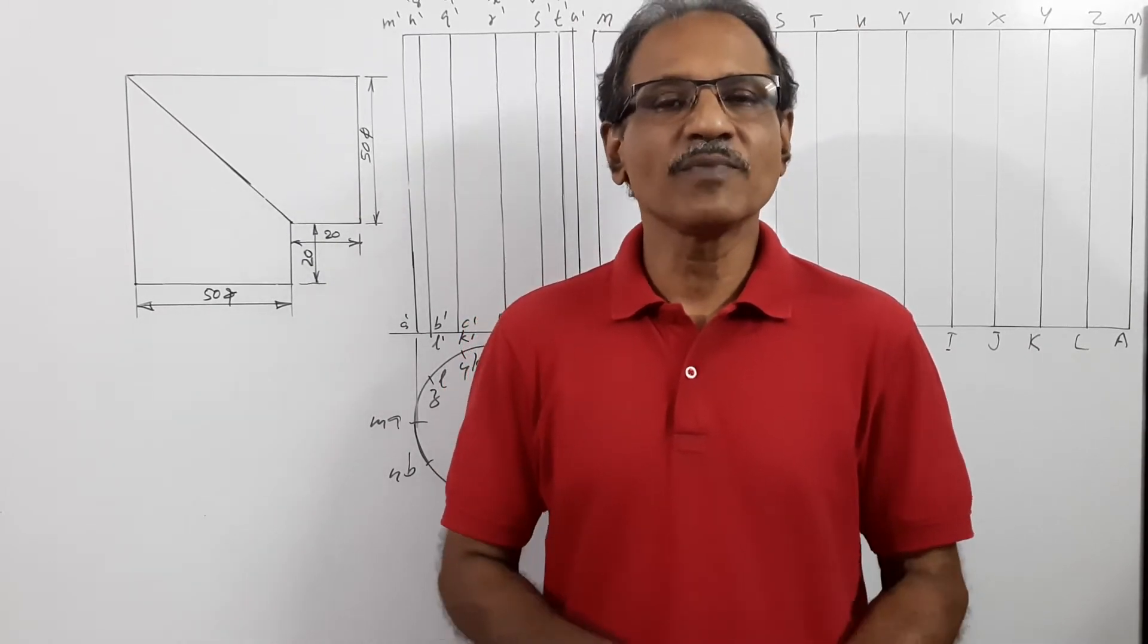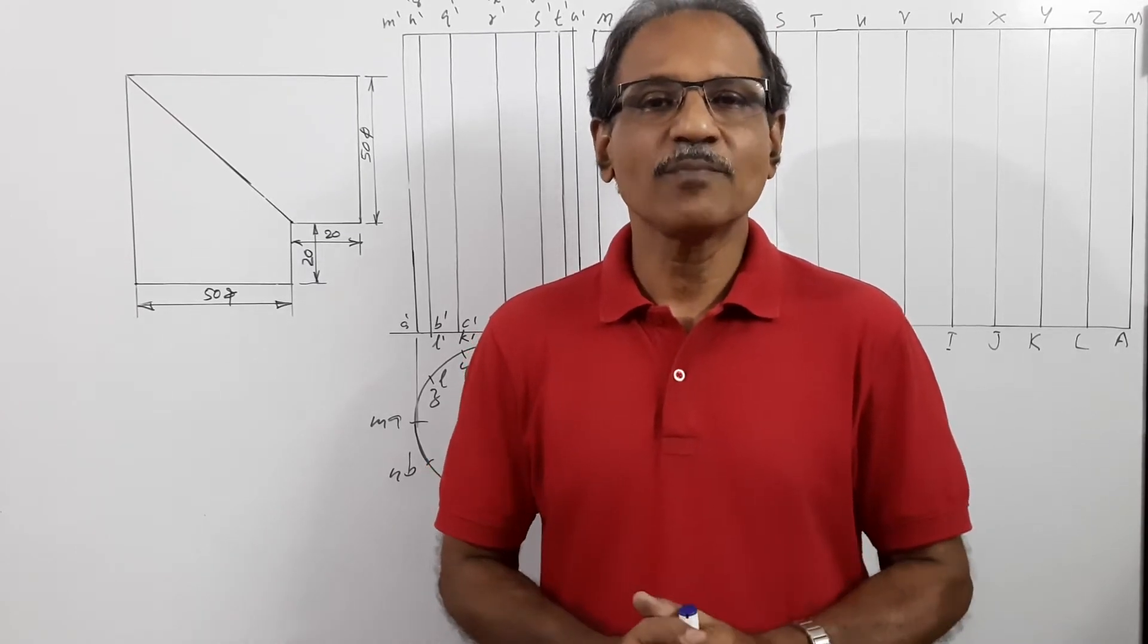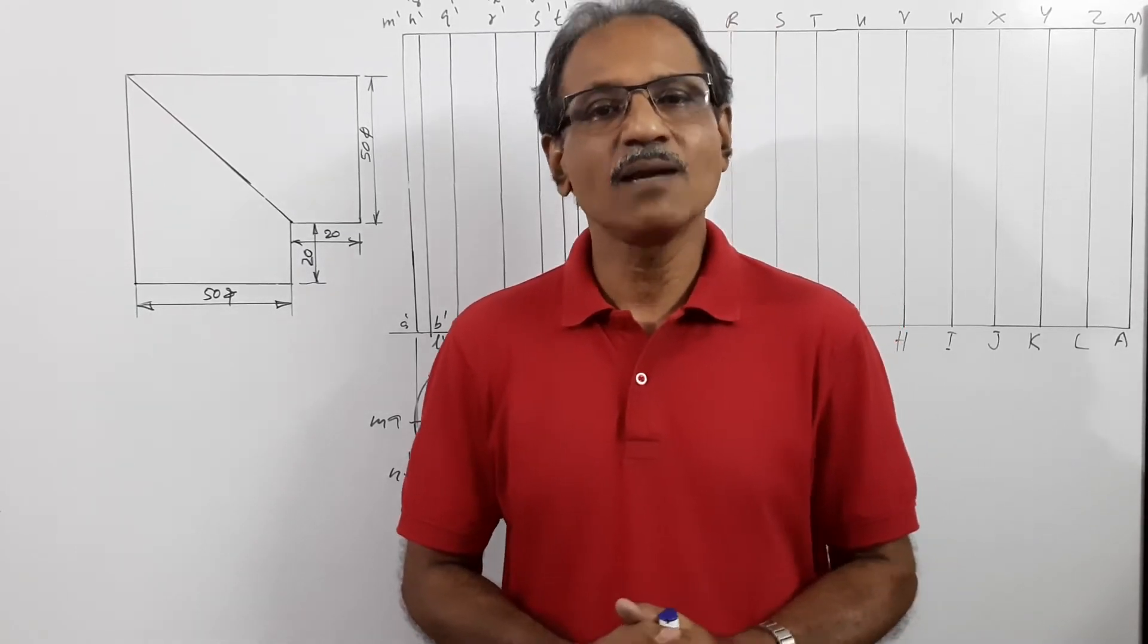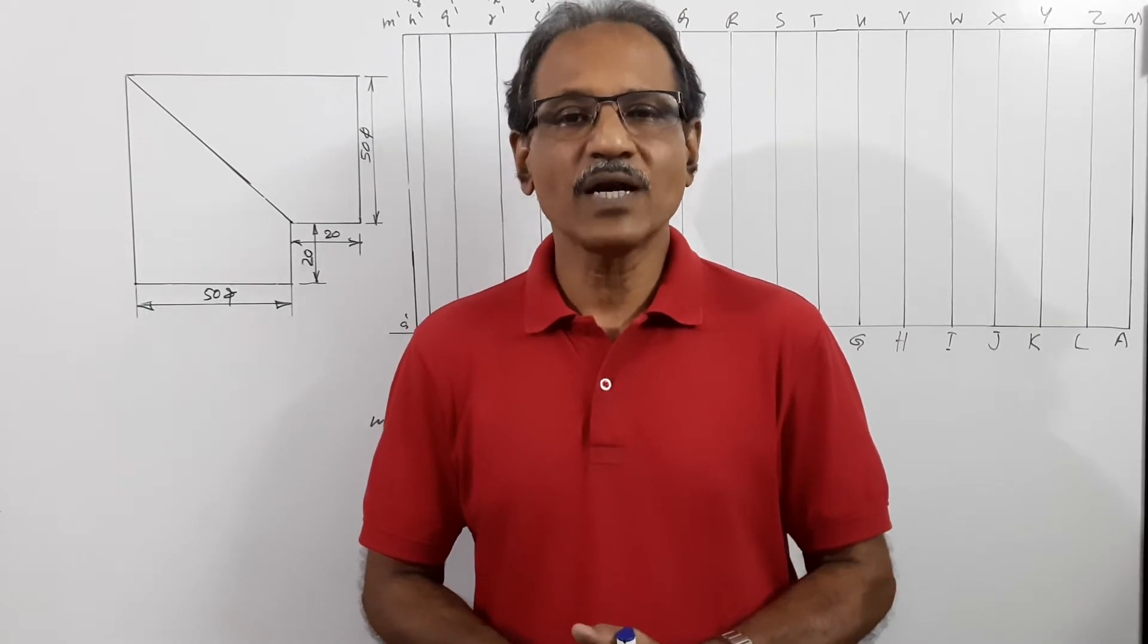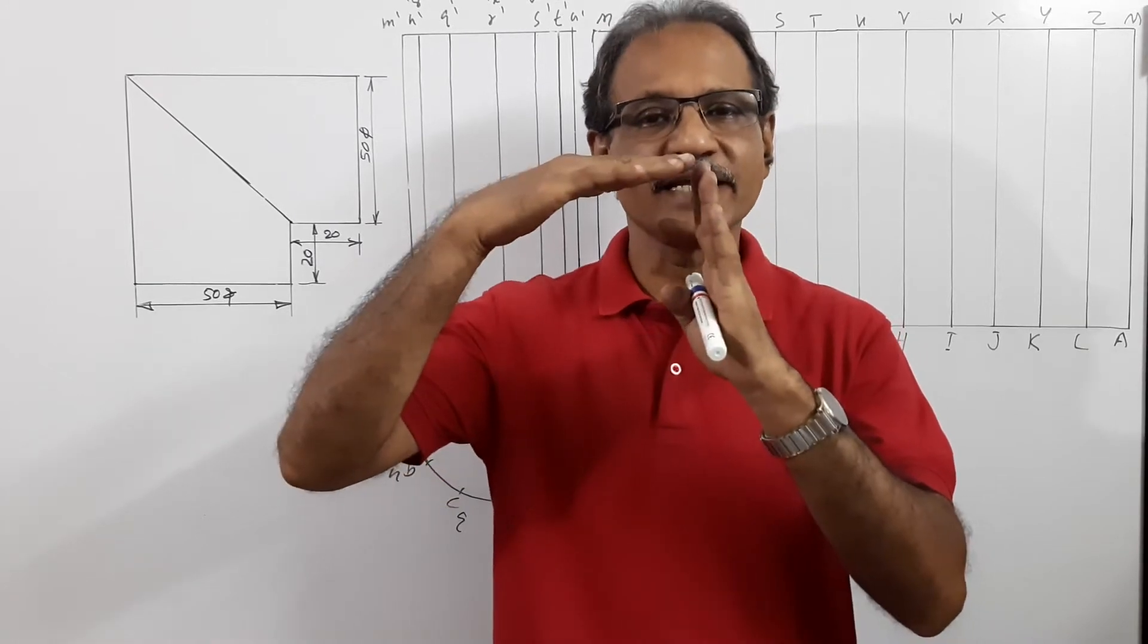In this problem in development of surfaces, we are going to draw the development of a pipe elbow. A pipe elbow is used to connect two pipes at 90 degrees.